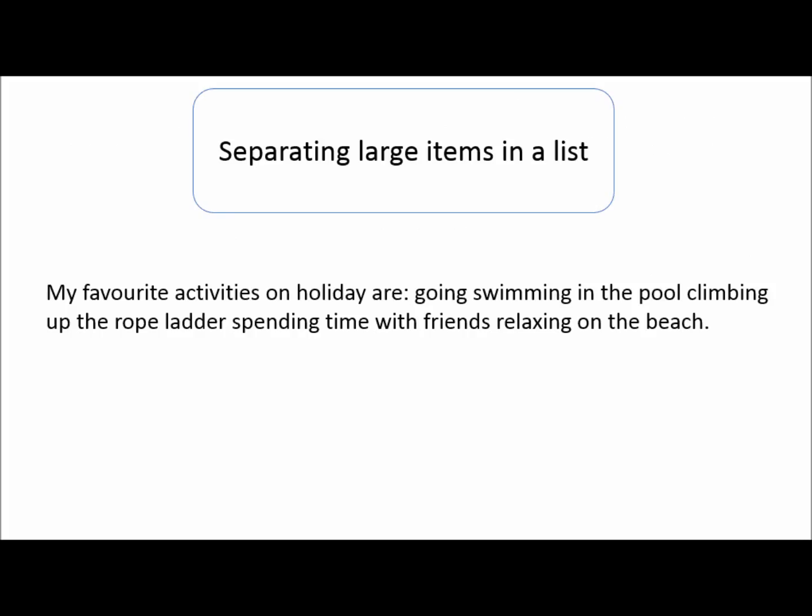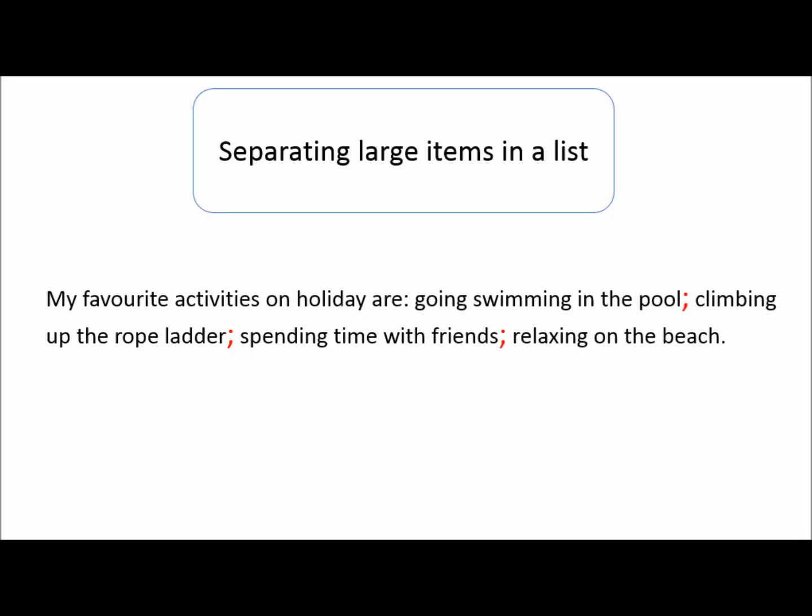The second reason for using a semicolon is to separate large items in a list. So here in this sentence, my favourite activities on holiday are going swimming in the pool, climbing up the rope ladder, spending time with friends, relaxing on the beach. Each item in my list is a phrase rather than just a single word, and so I can separate these large items by adding semicolons after pool, ladder and friends.